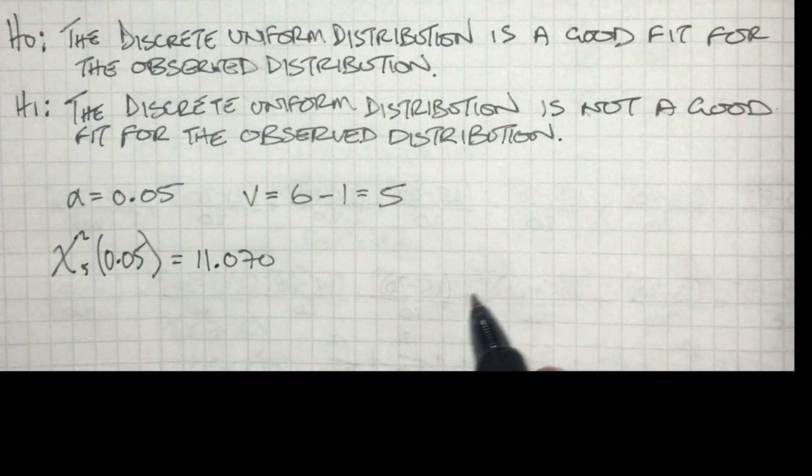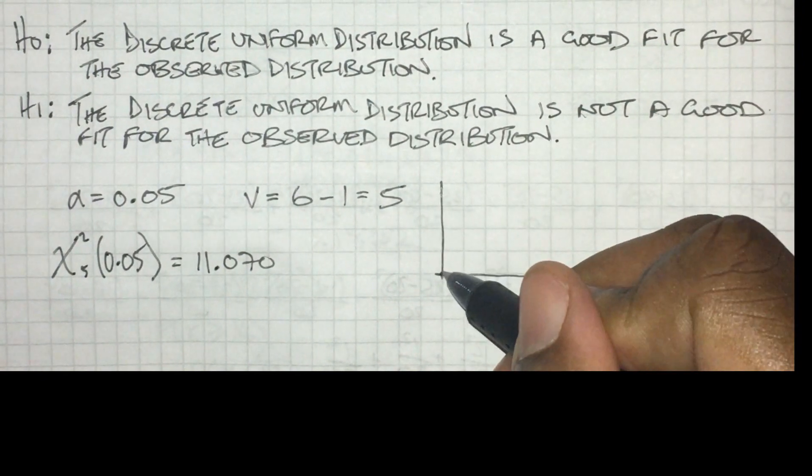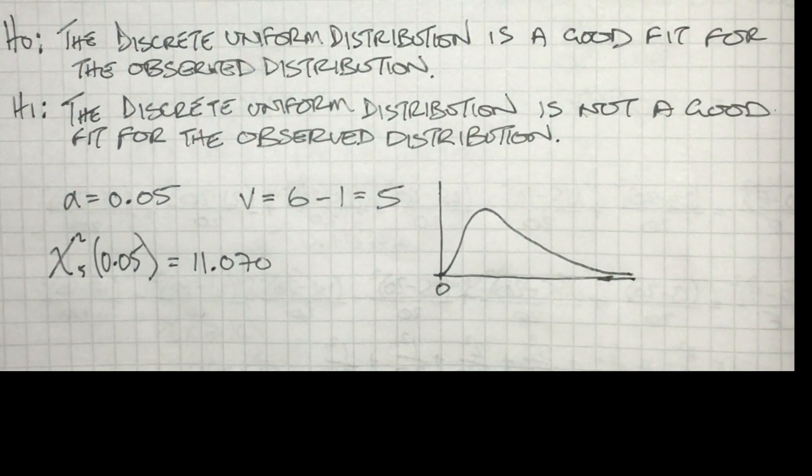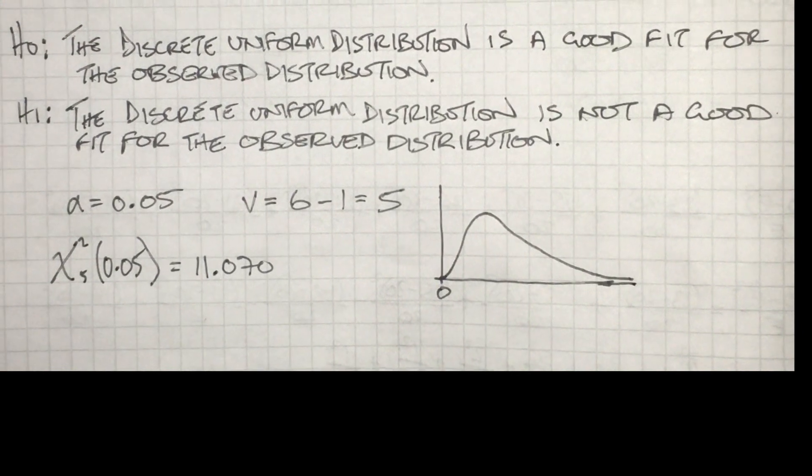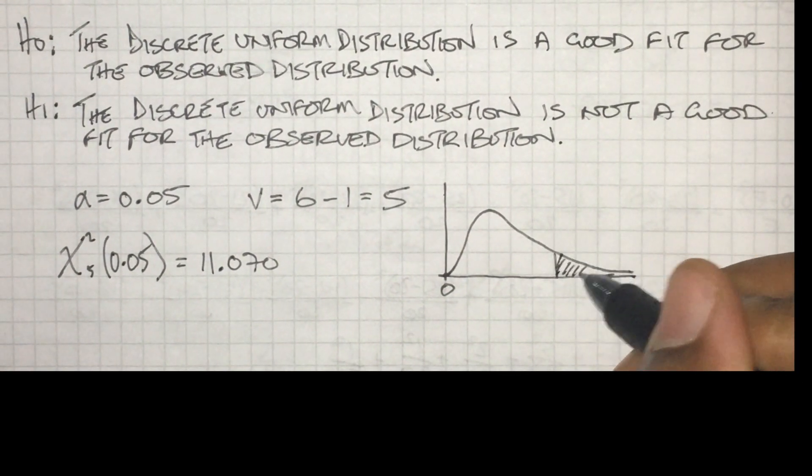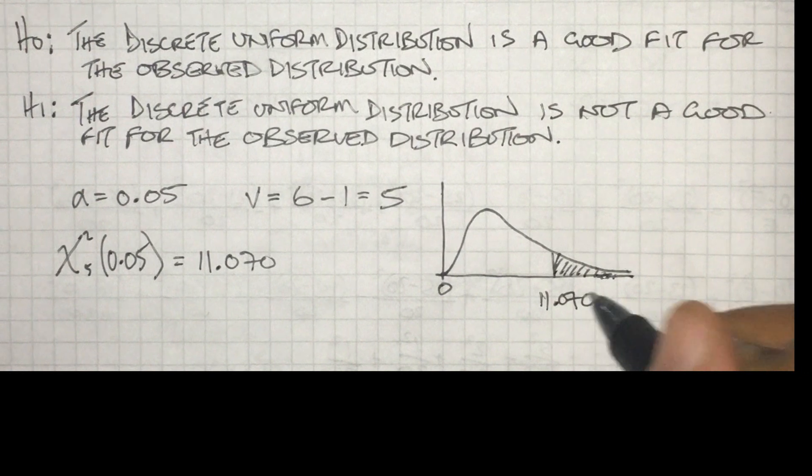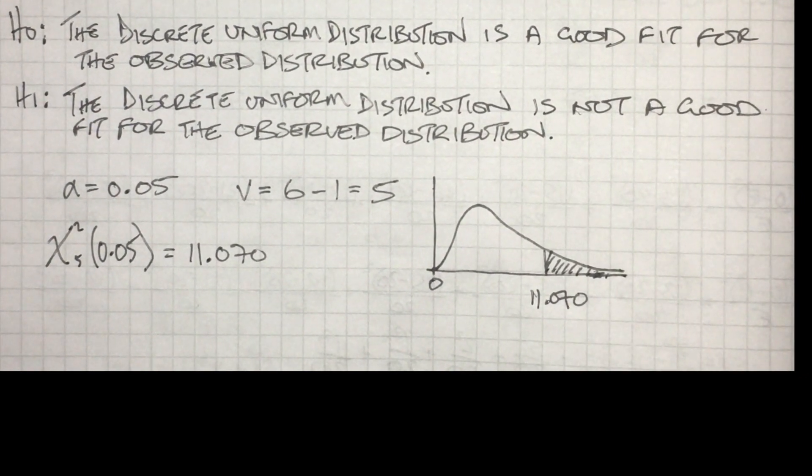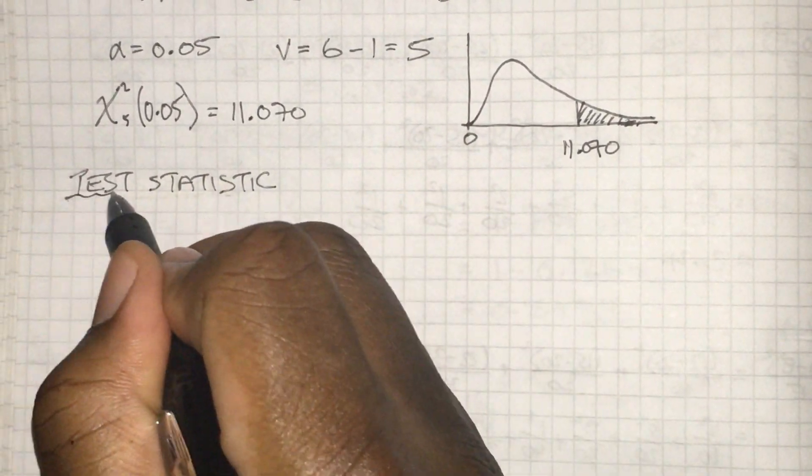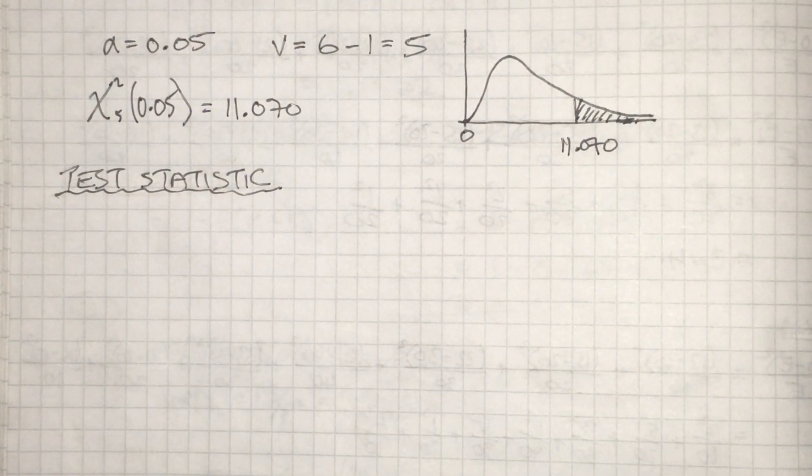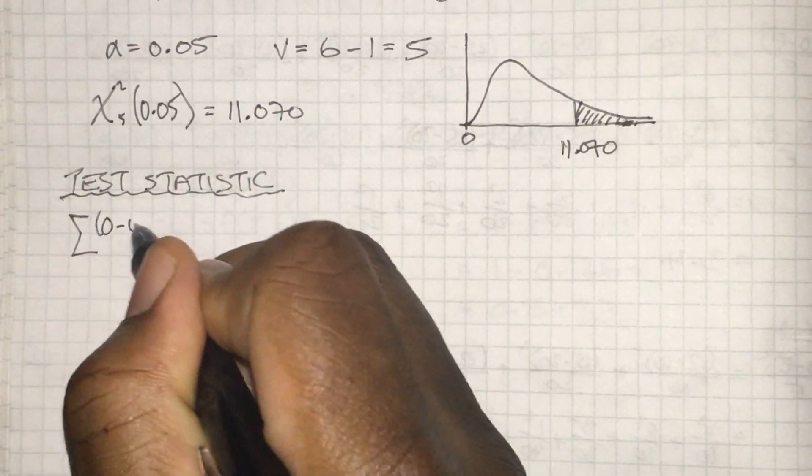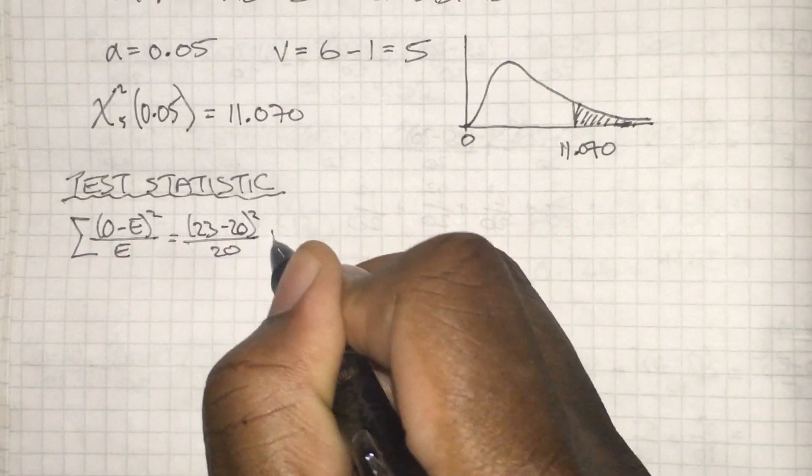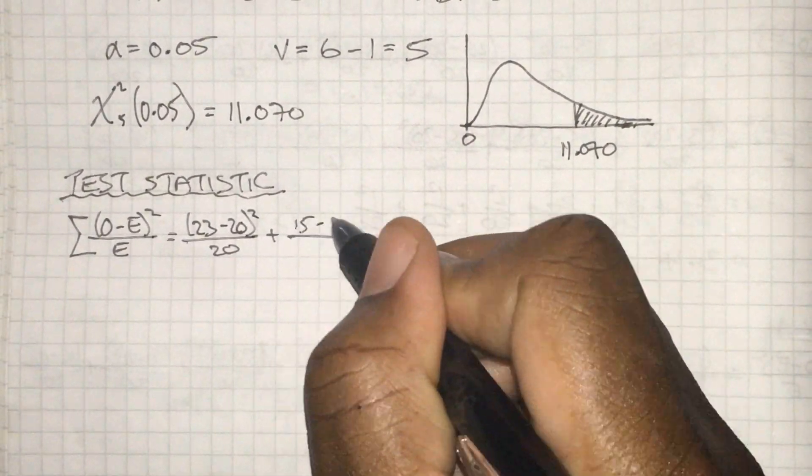Next I'm going to calculate the critical value. I'm going to look this up in the tables, so a chi-squared score with five degrees of freedom and a 5% level is 11.070. I'm going to put this onto the graph. Anything in this shaded region is going to be a significant result, providing evidence that suggests we should reject the null hypothesis.